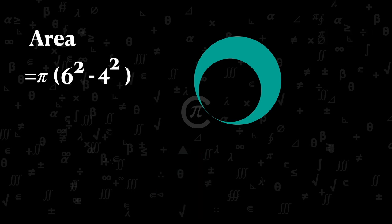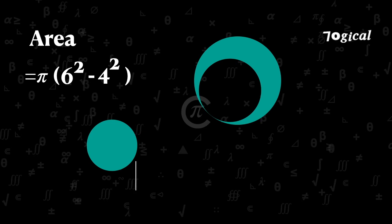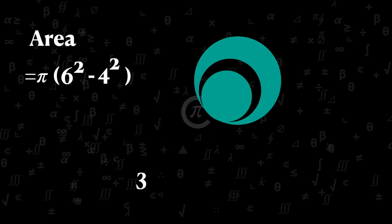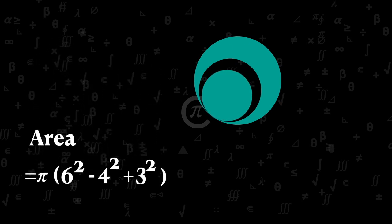And this is another shaded circle, has a radius of 3 unit. Now this circle insert into a blank circle. Then add this area of the circle in the shaded area. Then area becomes pi into 6 square minus 4 square plus 3 square.